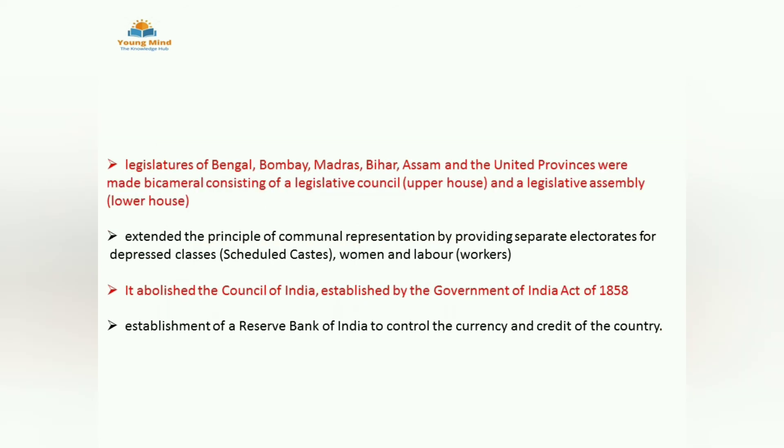The six provinces where bicameralism was introduced — legislative council and legislative assembly both — were Bombay, Bengal, Madras, Bihar, Assam, and United Provinces. Upper house and lower house are present today also. Extension of communal representation was done by providing separate electorate for the depressed class, women, and labour.